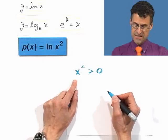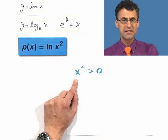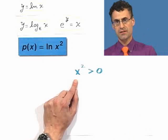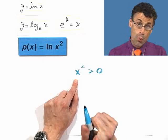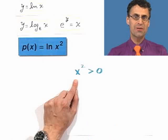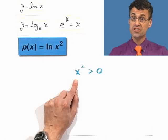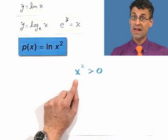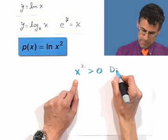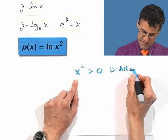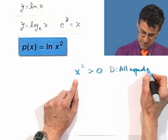So I have to satisfy that. But wait a minute. That's satisfying for basically all the numbers, right? Take any number and square it. You're going to get something positive, except for 1. Can you see which number? 0. 0 squared equals 0, and that's not allowed. So the domain here are going to be all numbers, except 0.